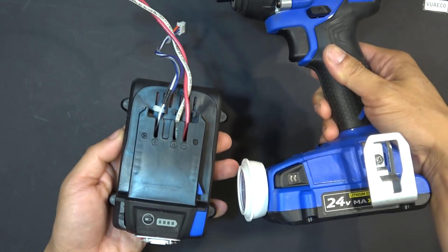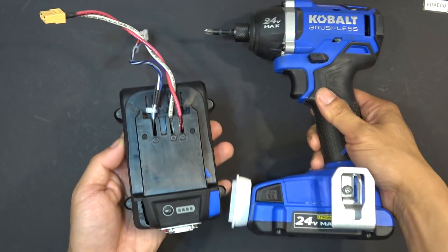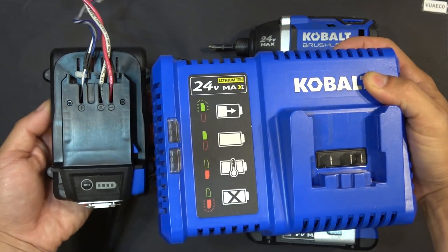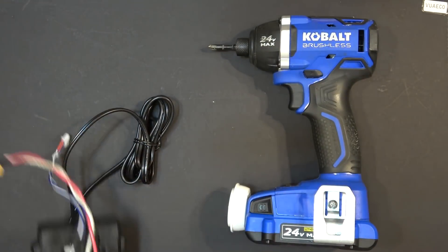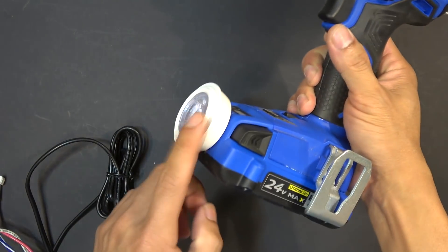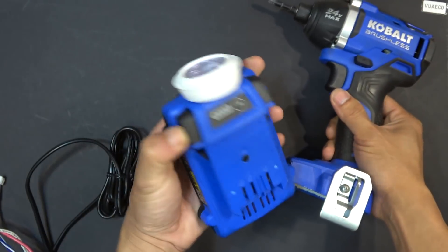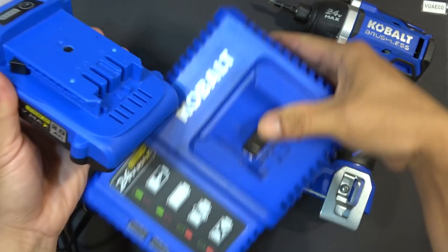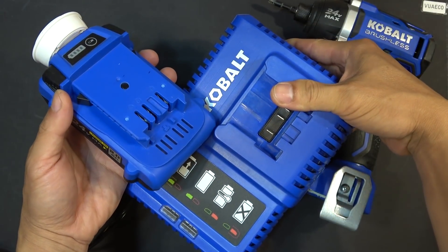So I cannot use this for my power tool or charge it using the original charger. Today I will add an LED flashlight to this battery pack without modifying it. That means I can still use it normally to run my tool and I can still use the original charger to charge it. Let's get started.